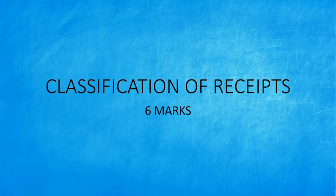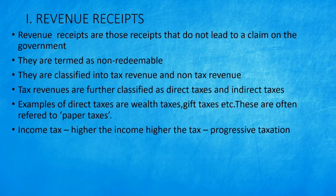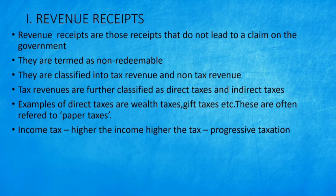So in the government budget chart, you will notice classification of receipts. How do we classify the receipts? Basically, they can be classified into two main categories: revenue receipts and capital receipts.